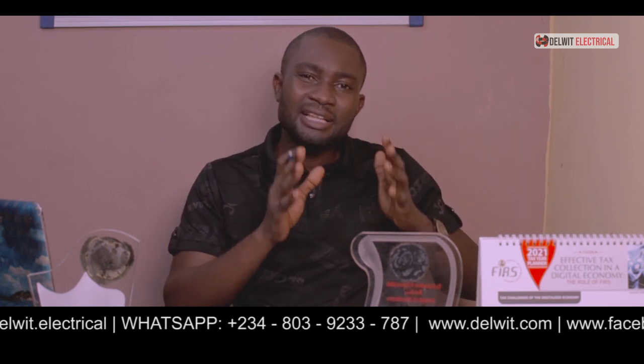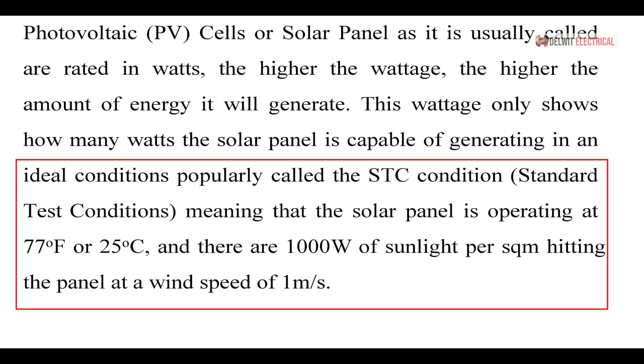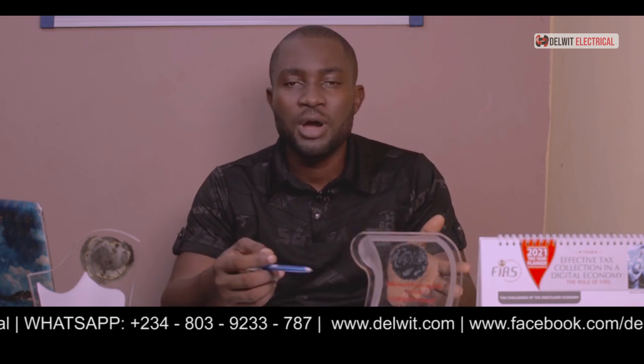Our discussion today is to talk about the sizing of your photovoltaic panels. The wattage rating on the panel is based on Standard Test Condition, or STC. As shown on our screen, STC conditions require: the test must be carried out at 77 degrees Fahrenheit or 25 degrees Celsius, there must be 1000 watts of sunlight per square meter hitting the panel, and the wind speed must be at one meter per second. When you don't always have these exact conditions, that is why a panel rated at 320 watts is approximate — it is rated at standard test conditions.